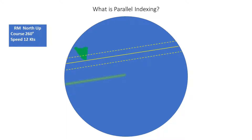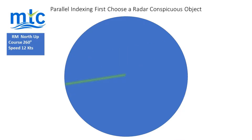A properly prepared parallel indexing plot will quickly show the navigator when the vessel begins to deviate from the desired track. This will enable corrective measures to be taken immediately, without resorting to time-consuming standard position fixing methods.